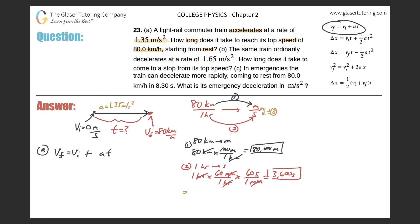For step three, take 80,000 meters and divide by 3,600 seconds. Using three significant figures — consistent with the given value of 80.0 — this comes out to 22.2 meters per second. So 80.0 kilometers per hour is equivalent to 22.2 meters per second, and I'll use this converted value in my formula.